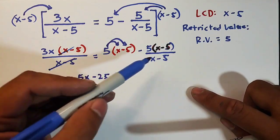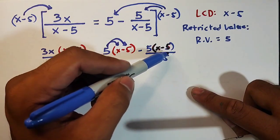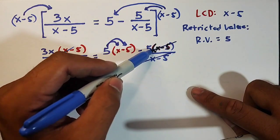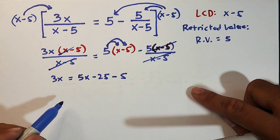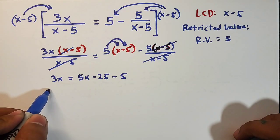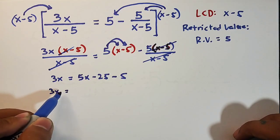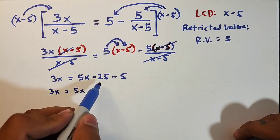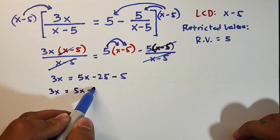And here guys, let's cancel out x minus 5 and x minus 5. We have minus 5. So we will simplify this equation. It will become 3x is equal to 5x and this one is negative 30.